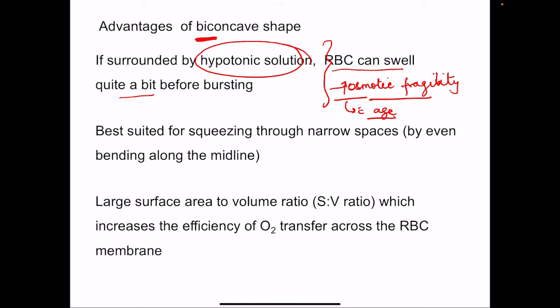The biconcave shape is best suited for squeezing through narrow spaces. The size of capillaries is around 5 to 6 micrometers while the diameter of RBCs is 7.5 micrometers — they can pass through because of this biconcave shape. Additionally, the biconcave shape gives a large surface area to volume ratio, which increases the efficiency of oxygen transfer, as more membrane is available for diffusion of oxygen across the RBC membrane.